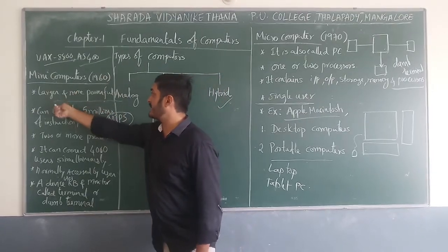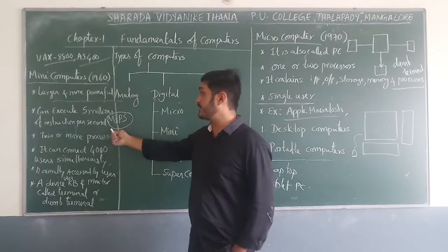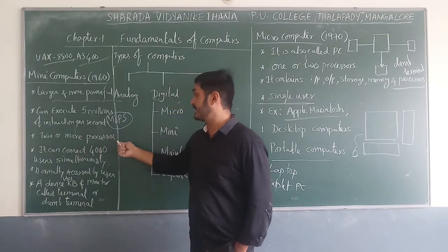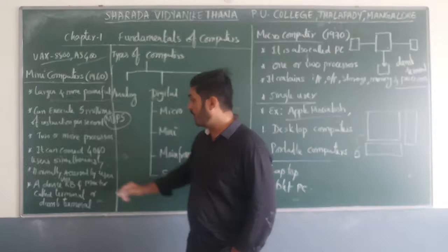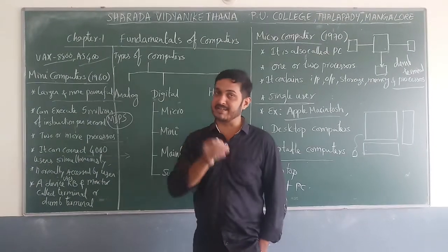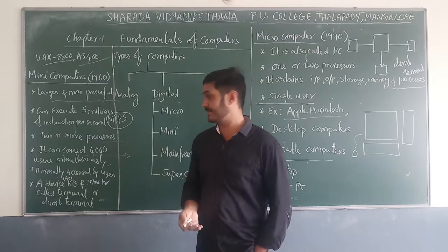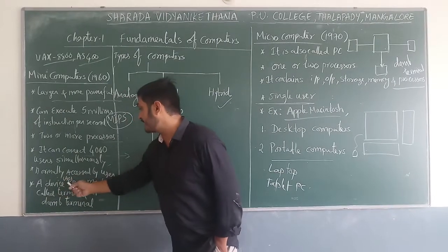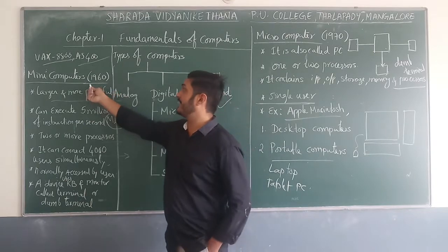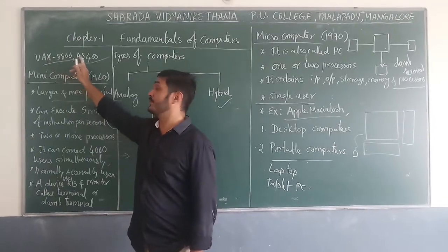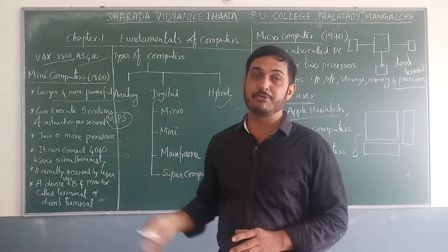To recap: mini computers were invented around 1960, they are larger and more powerful, execute five million instructions per second, use two or more processors, connect four thousand users simultaneously, and users access via dumb terminals — devices with only input and output units, no processing power. Examples: VAX-11/780 and AS/400.